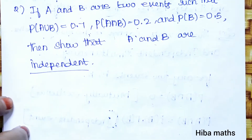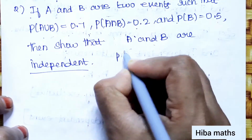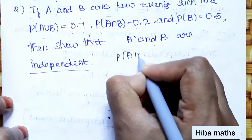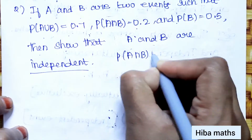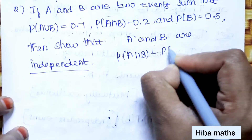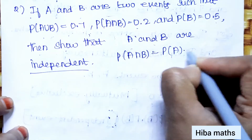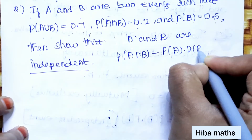A and B are independent means P(A∩B) = P(A) × P(B). We need to verify this condition.